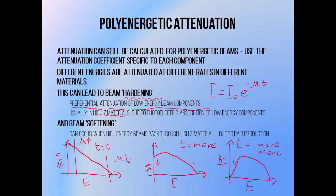The inverse can also occur when a very high-energy beam passes through a very high atomic number material — this is known as beam softening. When very high-energy beams pass through high atomic number materials, the pair production effect becomes more likely, so the higher-energy part of the spectrum becomes more likely to interact than the lower-energy parts. When a beam's average energy is increased via filtration, it's said to be hardened; when decreased, it's said to be softened. Hard equals high energy, soft equals low energy.